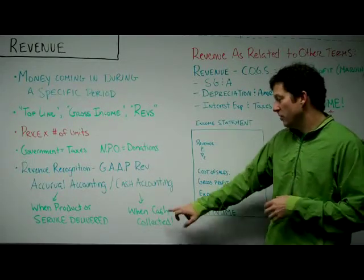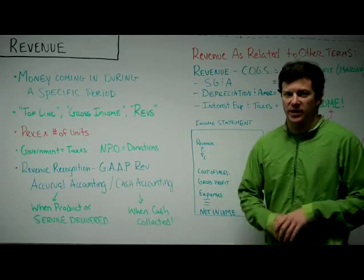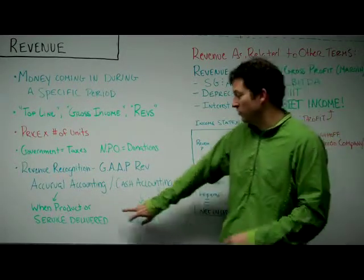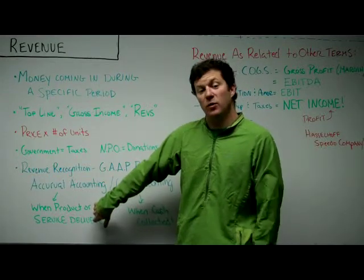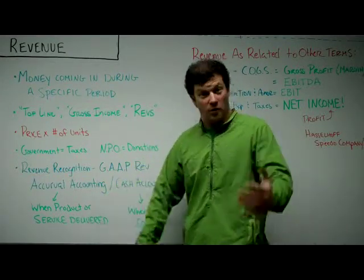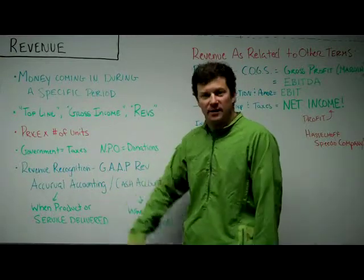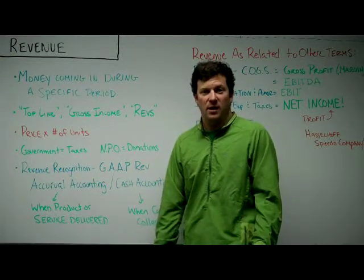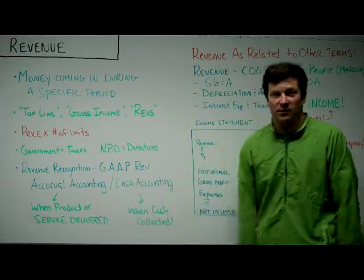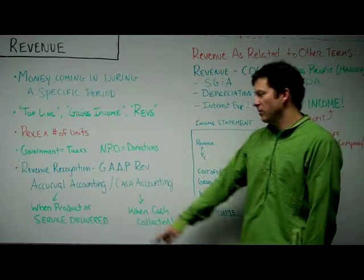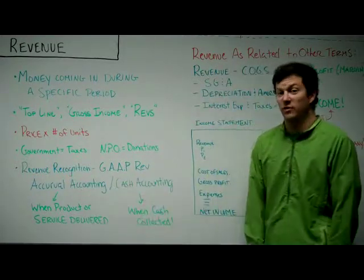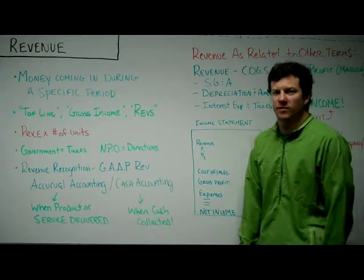Then there's cash accounting, where revenue is recognized only when the cash is actually collected. Cash accounting tends to be more conservative than accrual. For example, if you say your company did a million dollars in revenue last year, but only collected $200,000 because no one was paying their bills, that company might not be very healthy — but it's hard to tell just from the revenue figure. Generally, accrual accounting is slightly more aggressive, and cash accounting is more conservative in terms of how you recognize revenue.